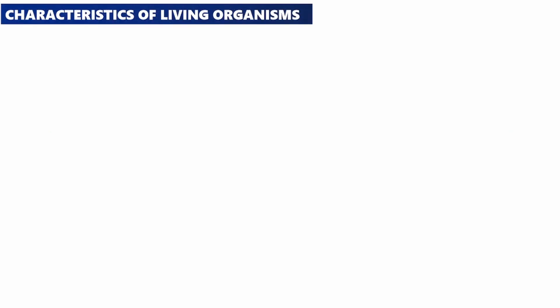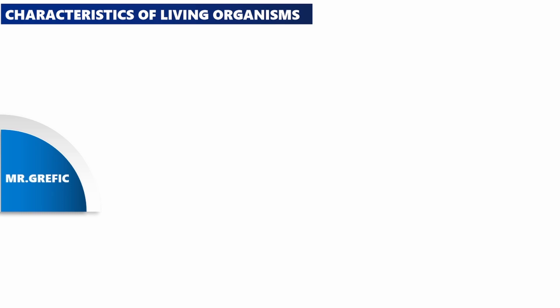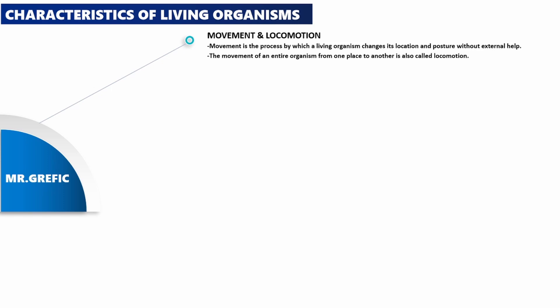Now let's look at the characteristics of living organisms. The easiest way to remember these characteristics is using the abbreviation MR GRAPHIC. M in MR GRAPHIC stands for movement and locomotion. Movement is the process by which a living organism changes its location and posture without external help, and the movement of an entire organism from one place to another is called locomotion.